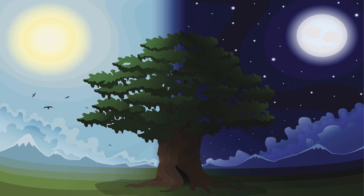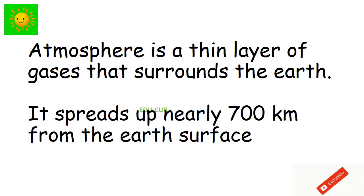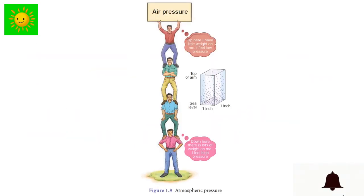You see all these objects through the atmosphere, but you cannot see the atmosphere. Atmosphere is a thin layer of gases that surrounded the earth. It spreads up nearly 700 kilometers from the earth's surface.